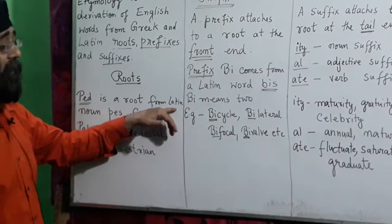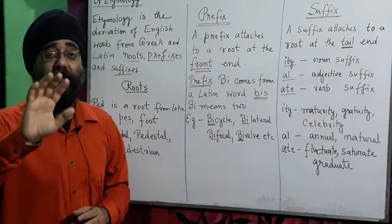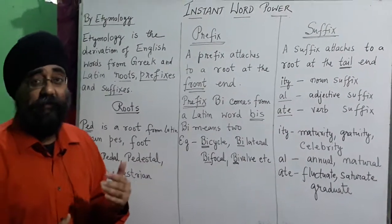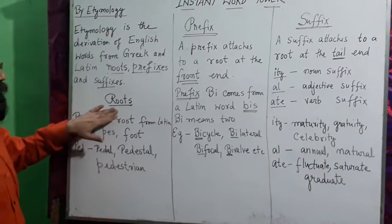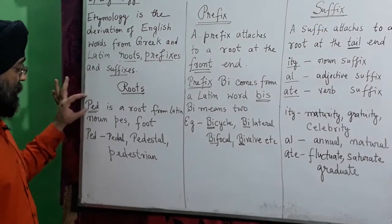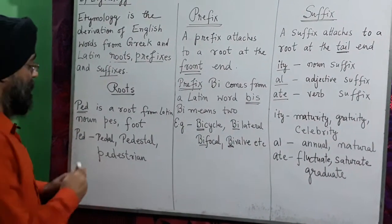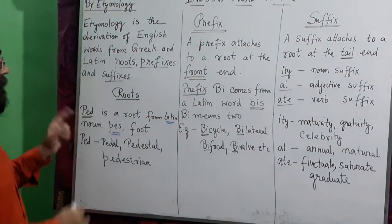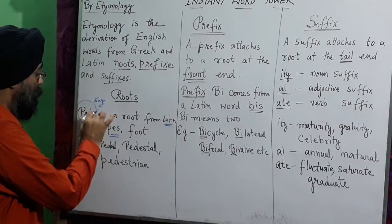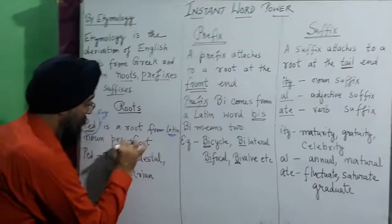PED is a root from Latin. As you know, English is a Roman language that has been derived from many languages, with its base from Latin and Greek. Latin and Greek were first spoken and were developed into the English language over time. PED comes from the Latin noun PES, and PES means 'foot.' So PED is our root word, meaning 'foot.'